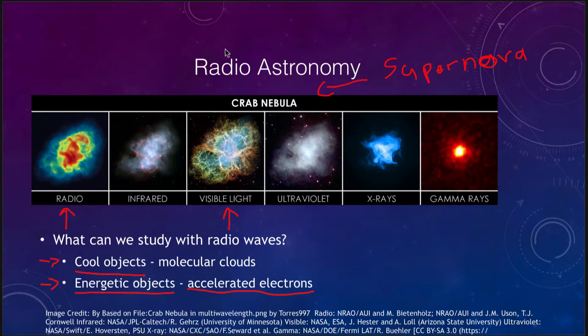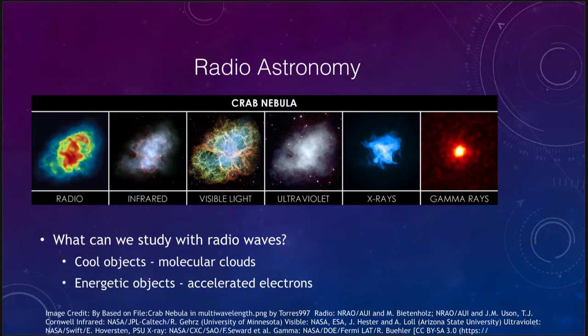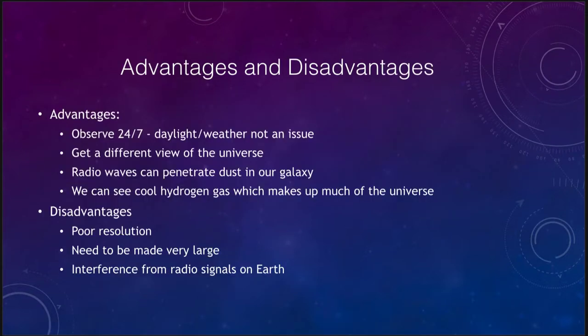Just 100 years ago, all we had was visible light — that was the only way we could observe anything. Now we can observe objects across the spectrum, and it gives us a much more complete view of the universe. So let's look at some of the advantages and disadvantages of using radio telescopes.